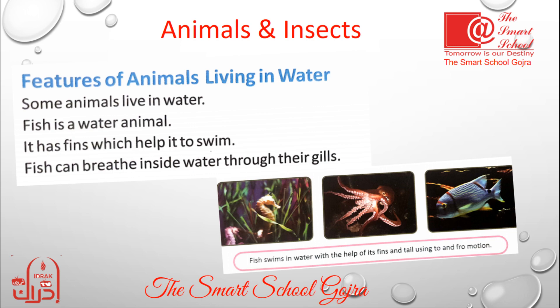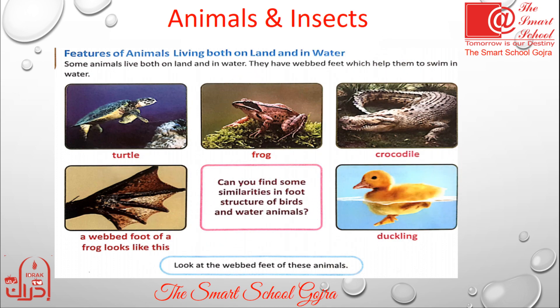Now we will study about the features of animals living on land and in water. Some animals live both on land and in water. Kuch animals zameen aur paani dono mein rehte hain. They have webbed feet which help them to swim in water. Inke jilli-dar panje hote hain jiske zariye se ye paani mein tarte hain. As you can see in your book, the examples like turtle, frog, crocodile, etc.